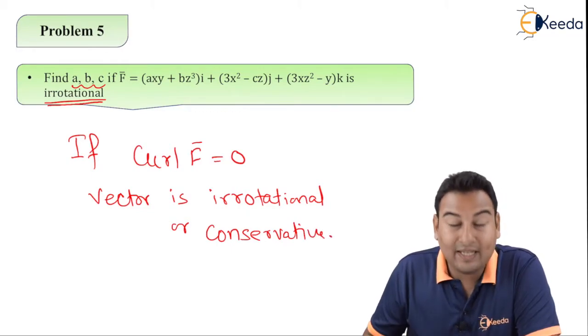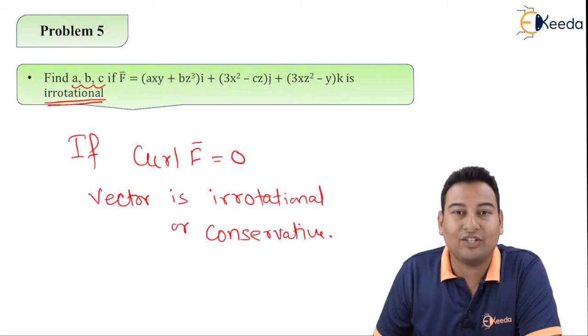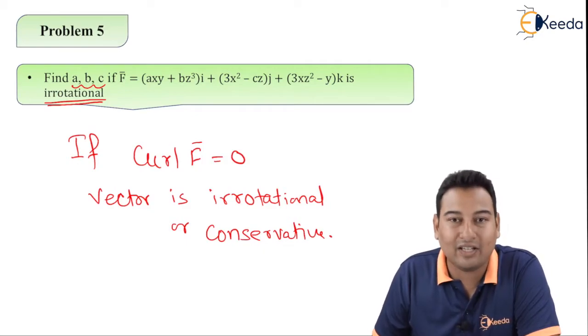Here in this problem, it is already given that the vector is irrotational. That means curl of F bar is equal to 0.